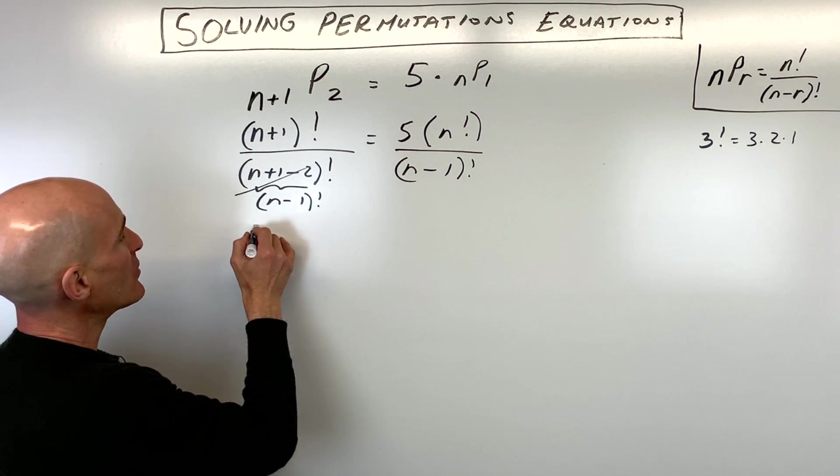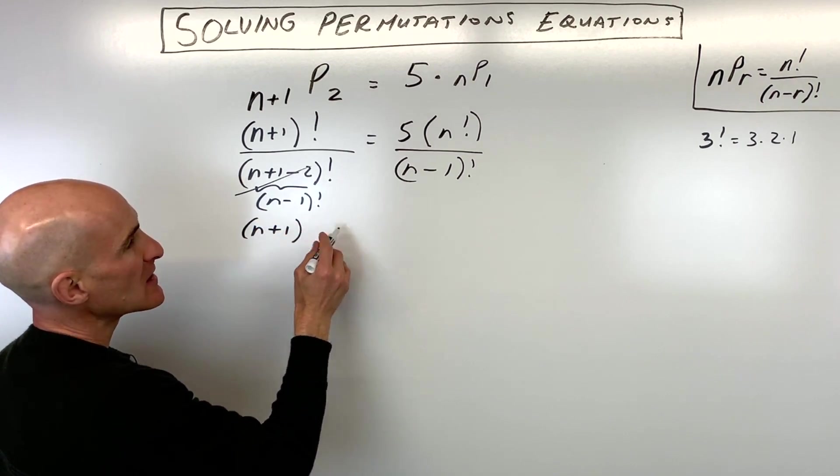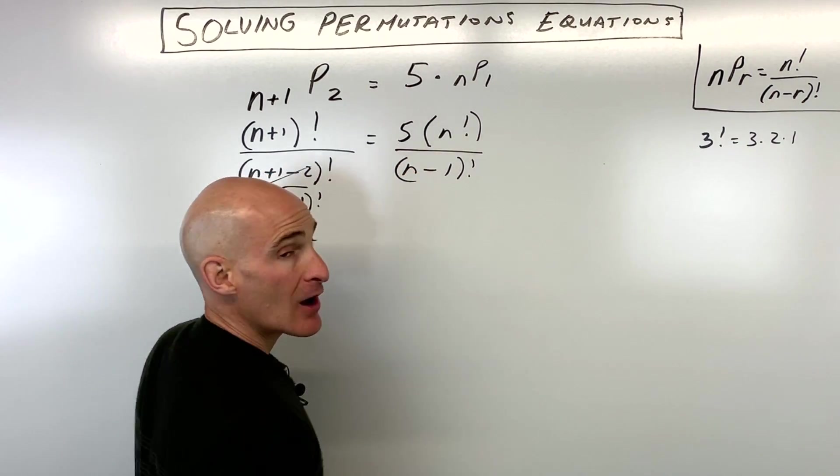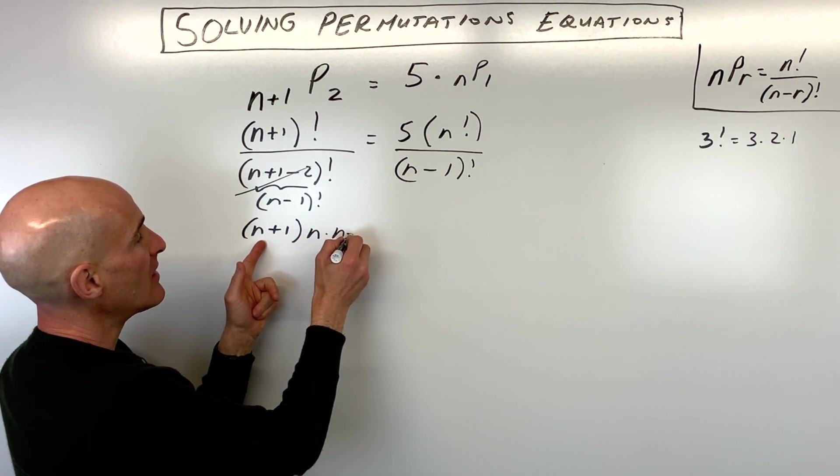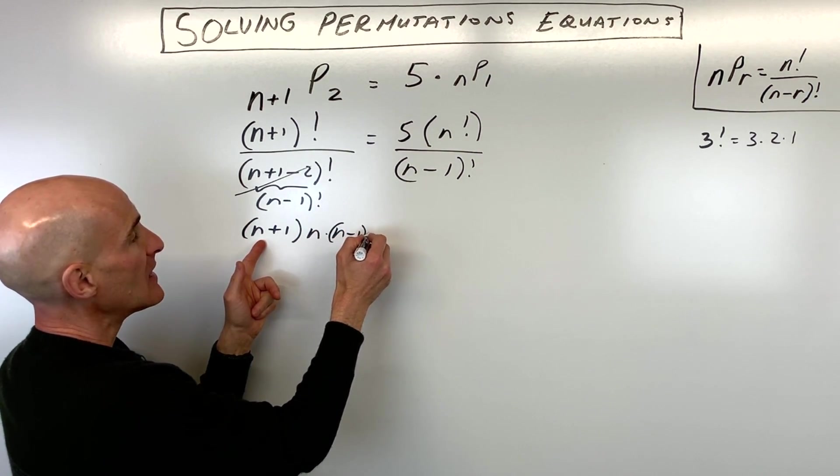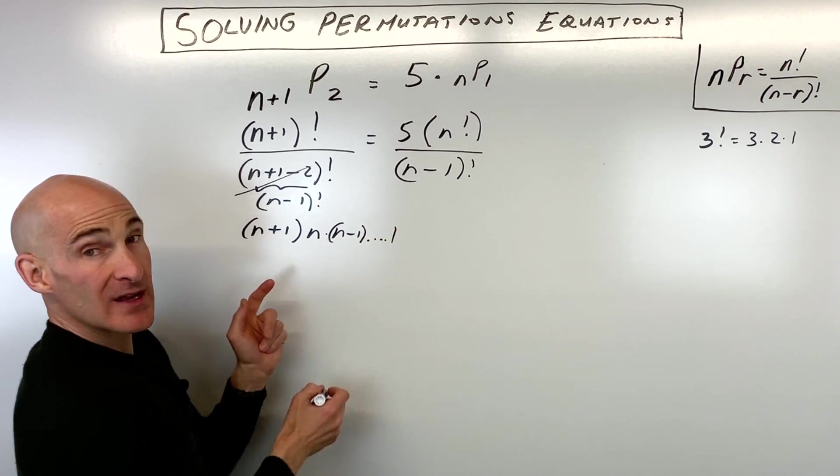So I'm going to take this (n+1) factorial, and remember it keeps multiplying down to 1, subtracting 1 each time. So (n+1) times n times (n minus 1) dot dot dot all the way down to 1.